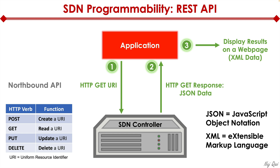The controller then parses all that data and returns it back to us in a human-readable format so we can read what we initially requested. Now, here I'm showing an example of reading, but you get the idea — it doesn't have to be just a read function. I could create interfaces like a loopback interface, or I can delete a loopback interface, or I can update an interface with a new IP address, an ACL, or whatever have you.